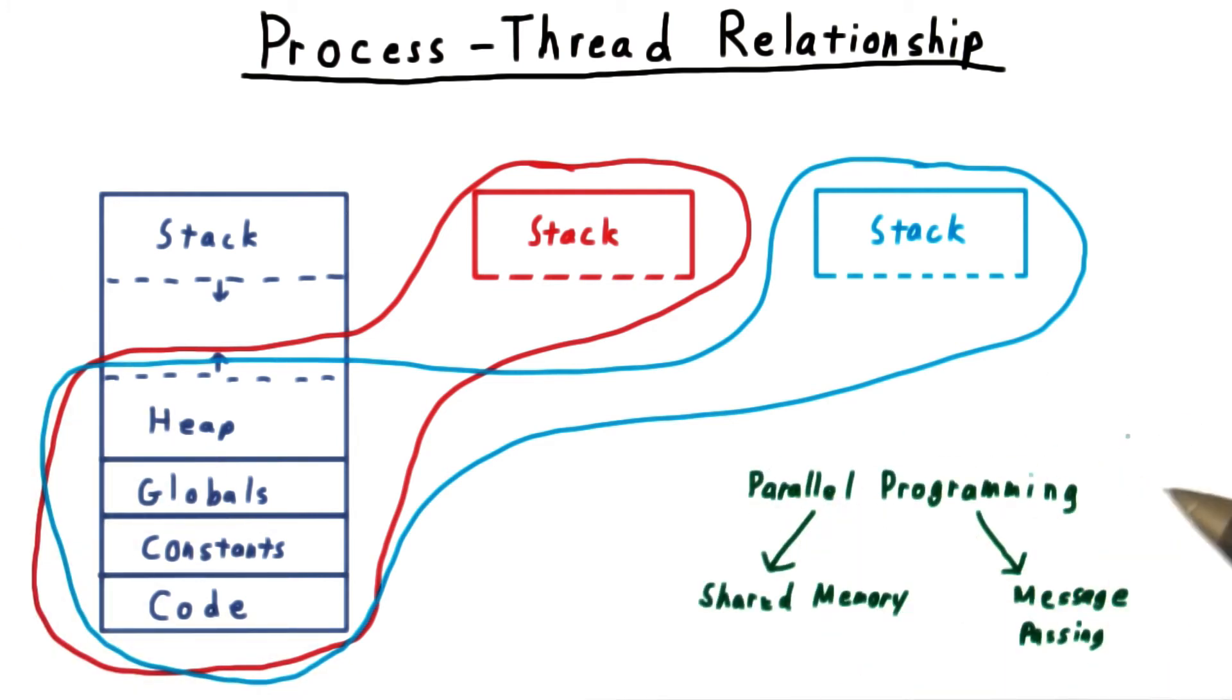I should point out as well, that one can do parallel programming without having multiple threads. Each parallelizable task could have its own process with its own address space, and it could communicate with the other processes through message passing.